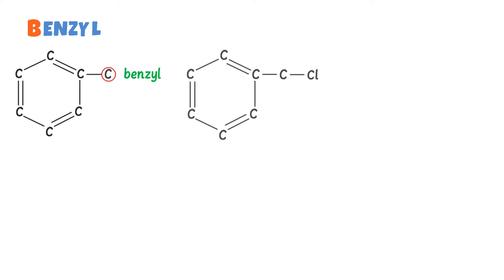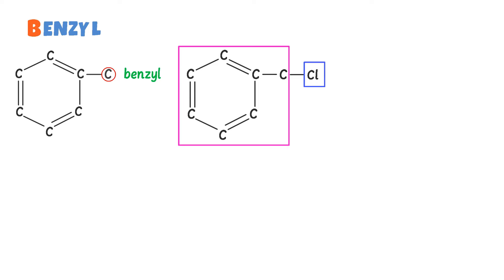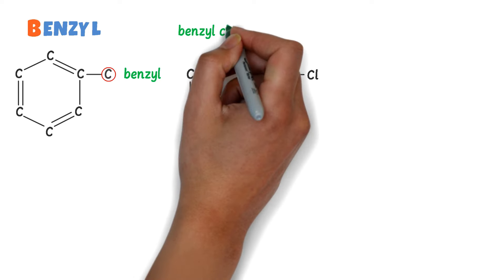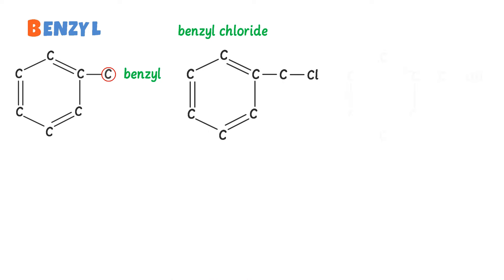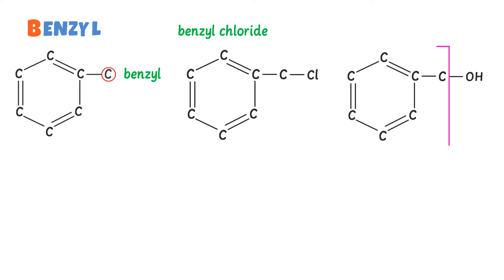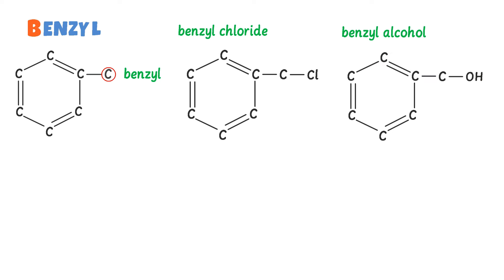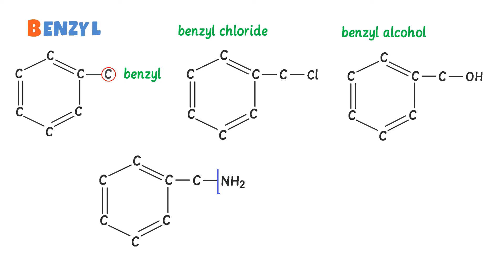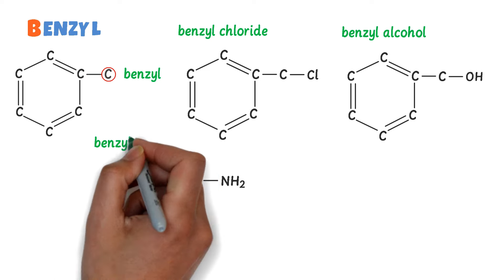For example, consider this organic compound — we can see that this whole thing is Benzyl, and the functional group Cl is bonded to it. Thus I get Benzyl chloride. Secondly, consider this organic compound — again this whole thing is Benzyl, and the functional group OH is bonded to it. Thus I get Benzyl alcohol. Thirdly, consider this organic compound — the functional group NH₂ is bonded to Benzyl. Thus I get Benzyl amine.